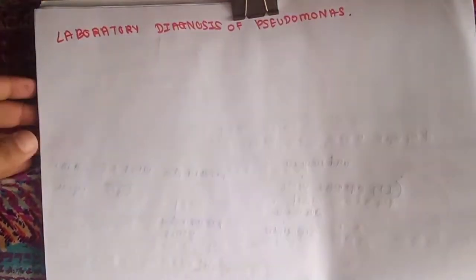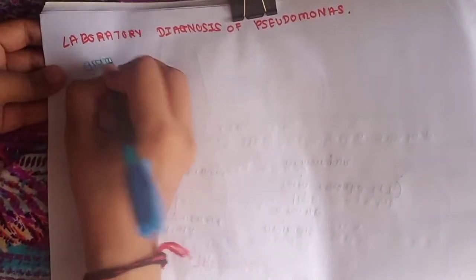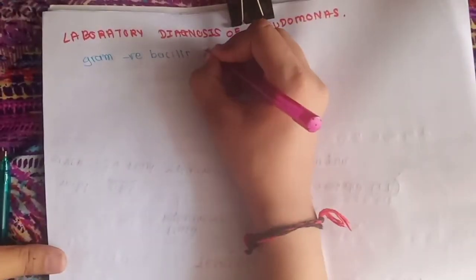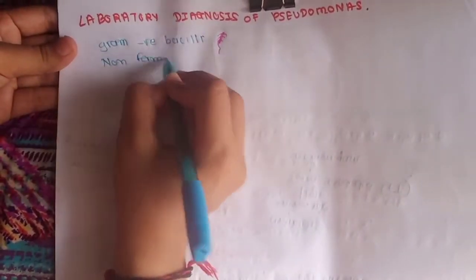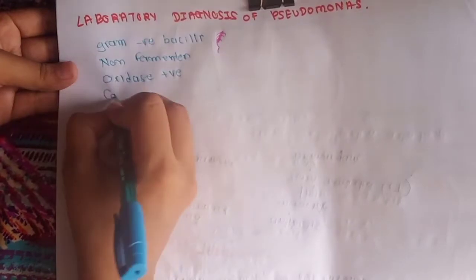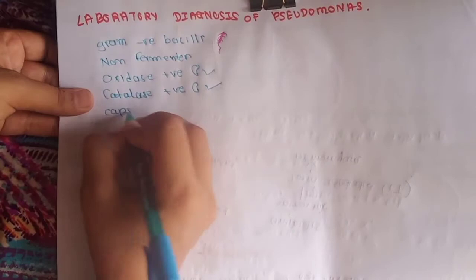Pseudomonas is a gram-negative bacilli with pili and flagella on their surface. Gram-negative means pink in color. They are non-sugar fermenters and will not ferment sucrose, glucose, or lactose. They are oxidase positive and catalase positive, so they will produce respective enzymes.